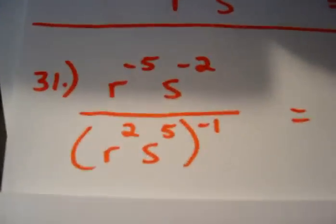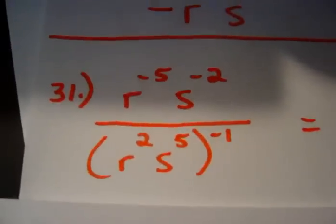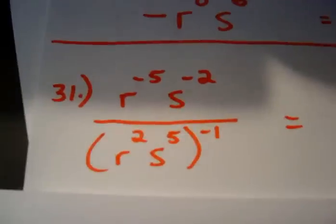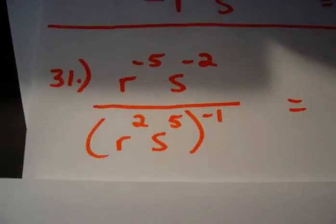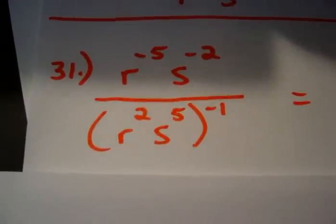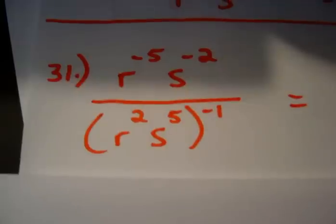Finally, we're going to take a look at one more here. This is number 31 in the text, and we're going to go right for it here. We have r to the negative 5th s to the negative 2nd divided by the quantity of r squared s to the 5th, the whole thing raised to the negative 1.